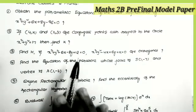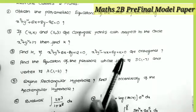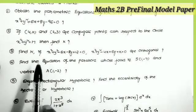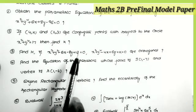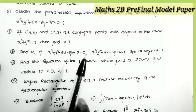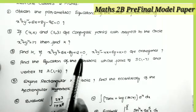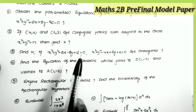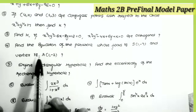The third question is from the topic system of circles: find the value of k if the given circles cut orthogonally. That is the given condition — we want the k value. This is a most important and frequently repeating model. The condition for two circles cutting orthogonally is: 2(g·g') + 2(f·f') = c + c'.